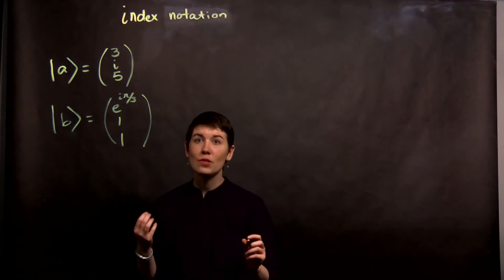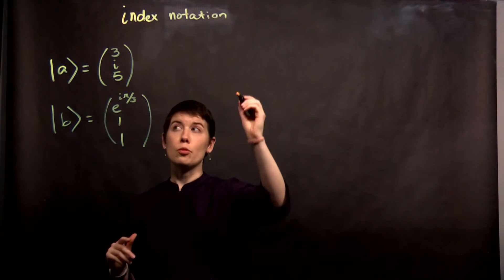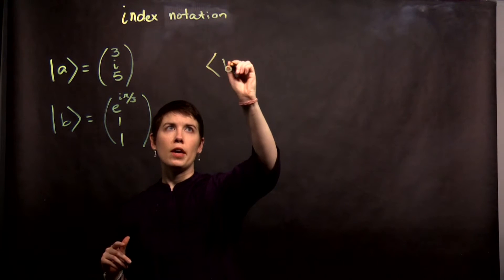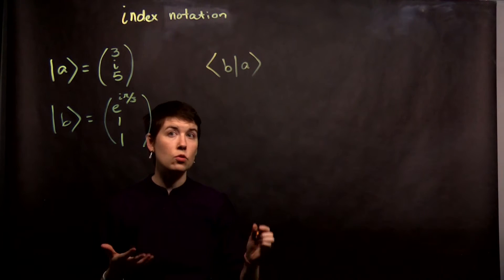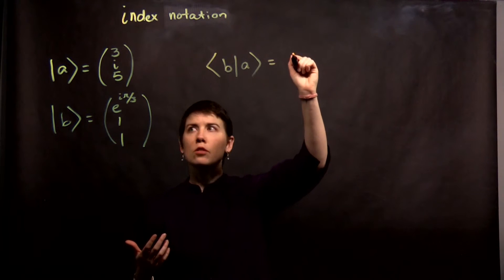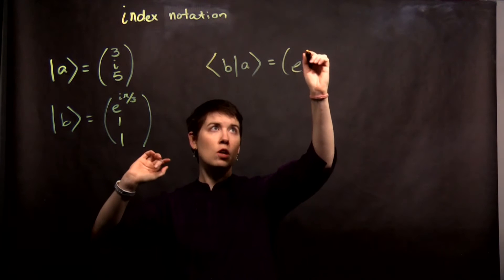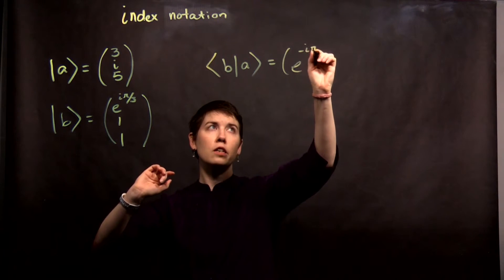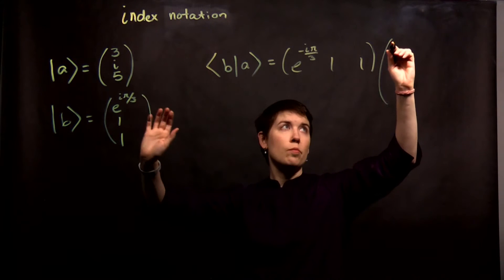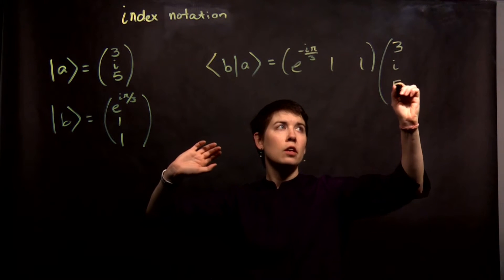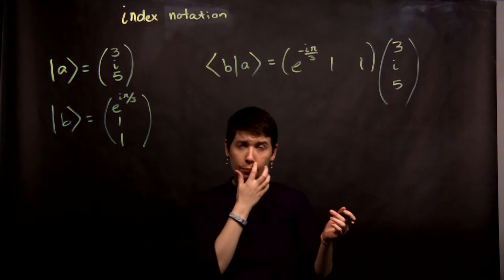So the idea of summation is that we might want to, for instance, take the inner products of these two things. So maybe we have b and the inner product of a. So one way to do that would be to simply take this and say, okay, I need to complex conjugate, so this becomes e to the negative i pi over 3, 1, 1, and this becomes the same thing it originally was. And then we can multiply it out, row, column, you get your answer.